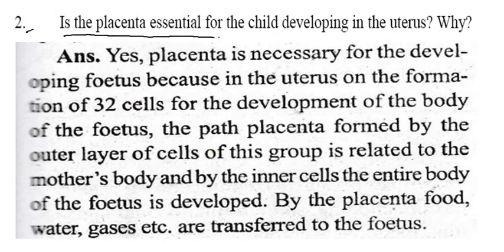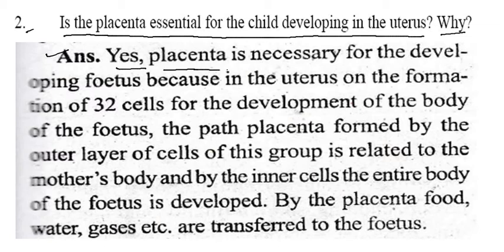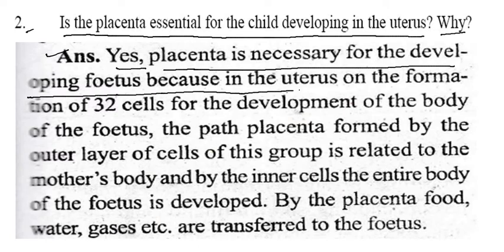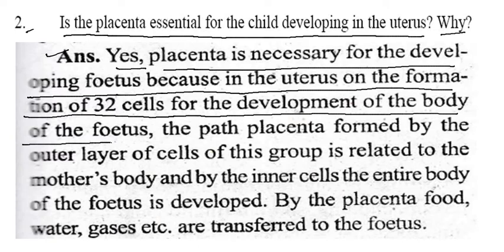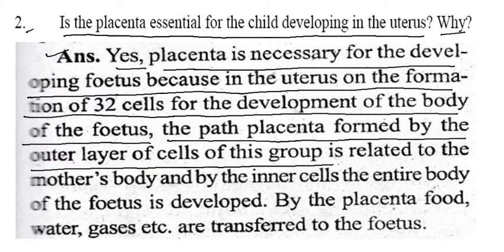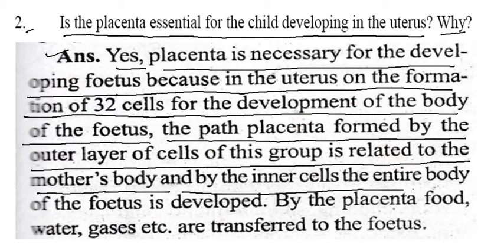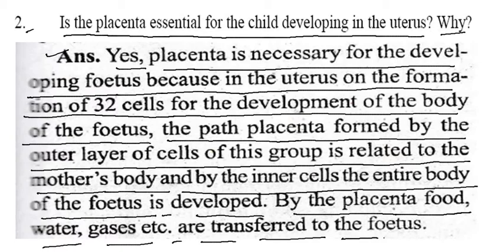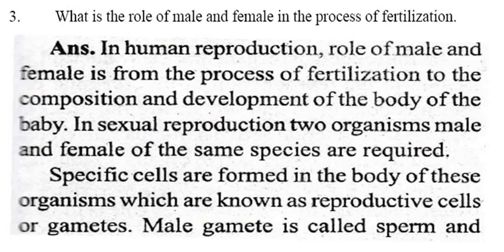Is the placenta essential for the child developing in the uterus? Why? Answer: Yes, placenta is necessary for development because in the uterus, on the formation of 32 cells, the outer layer of cells forms the placenta related to the mother's body, and by the inner cells the entire body of the fetus is developed. Water, gas, etc. are transferred to the fetus.